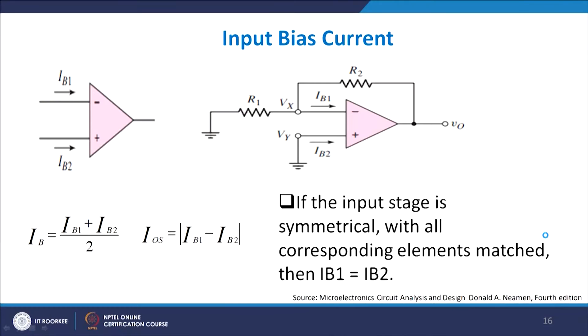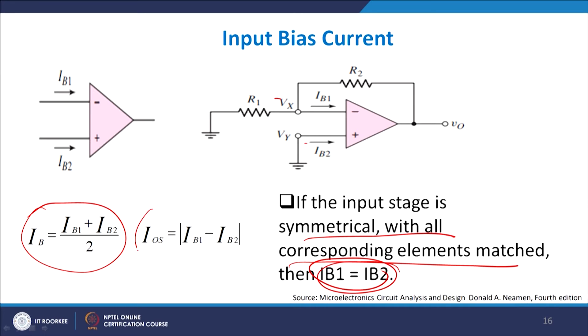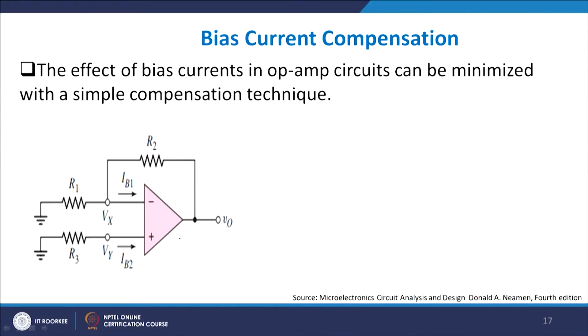The input bias current: if the input stage is symmetrical with matched components, IB1 equals IB2. The bias current IB is defined as the average (IB1 + IB2)/2, and the offset current is defined as the difference IB1 − IB2. In reality IB1 and IB2 should be equal but are not, so there will be a difference. For bias current compensation, by choosing the appropriate value of R3, you can make IB1 equal to IB2.